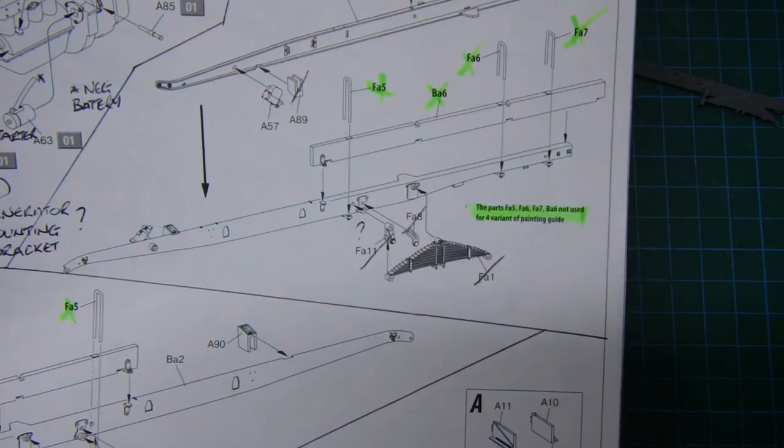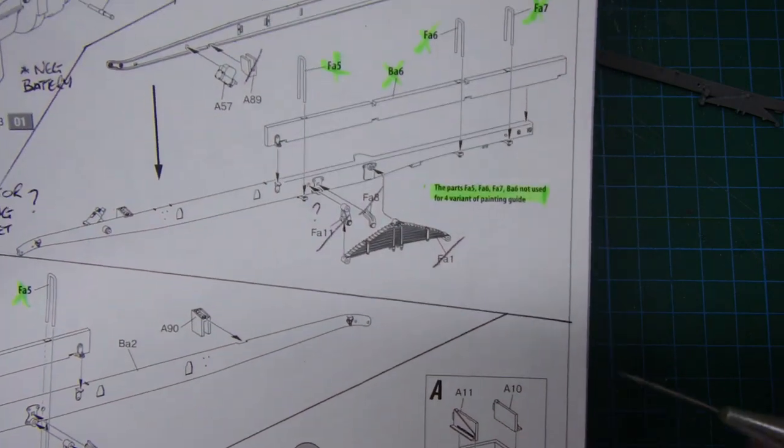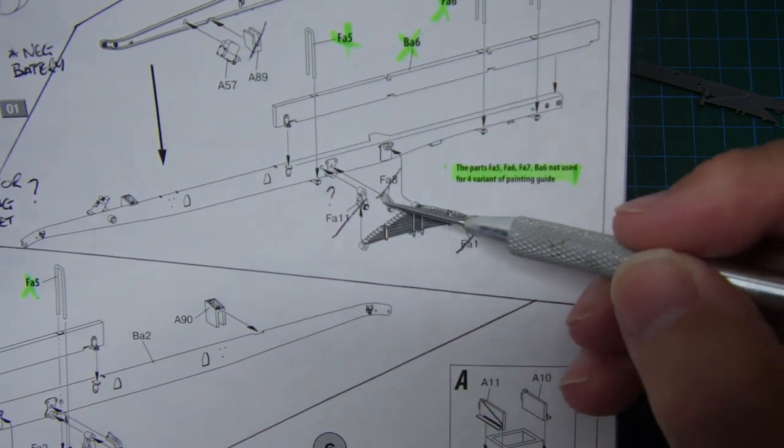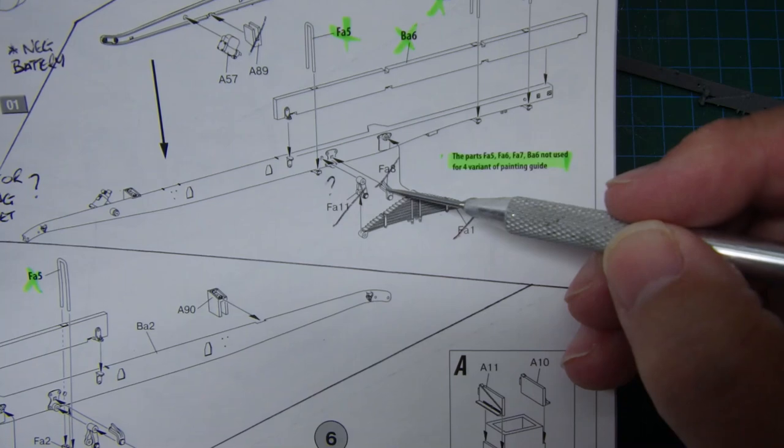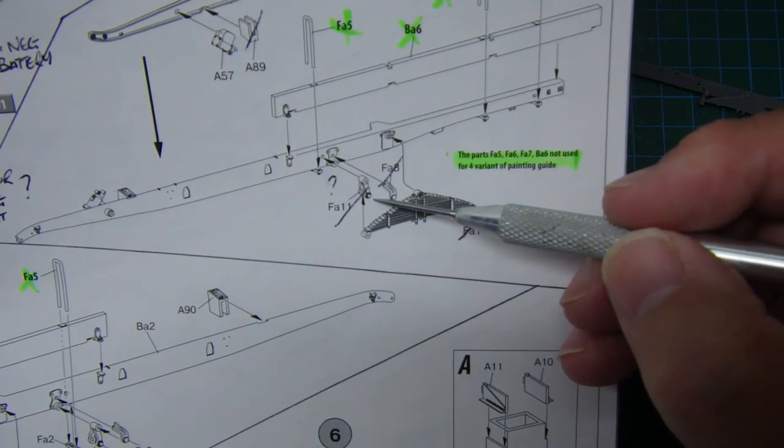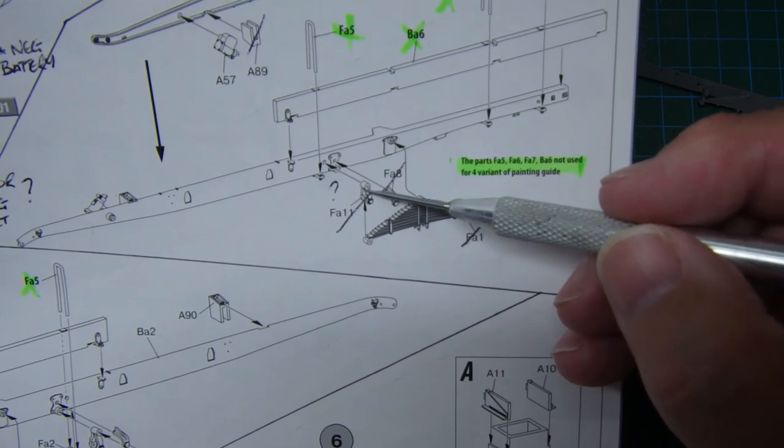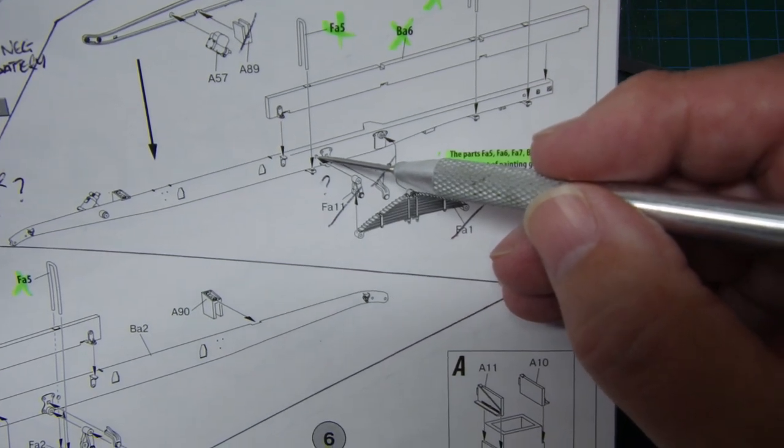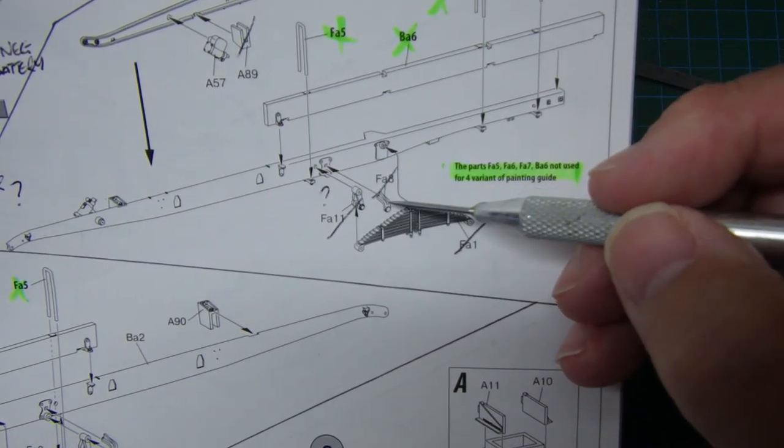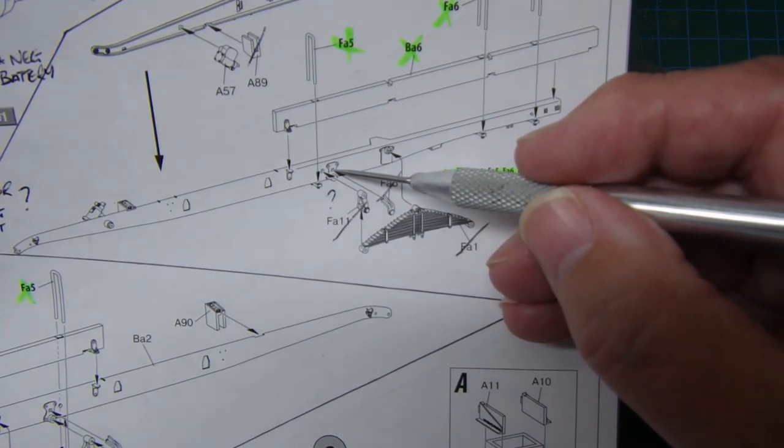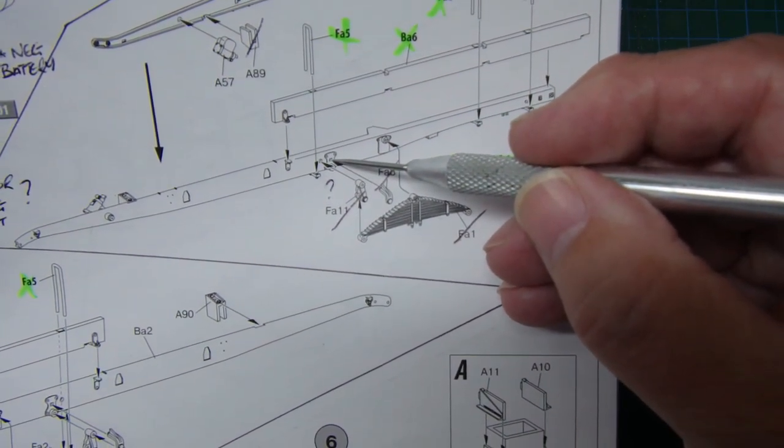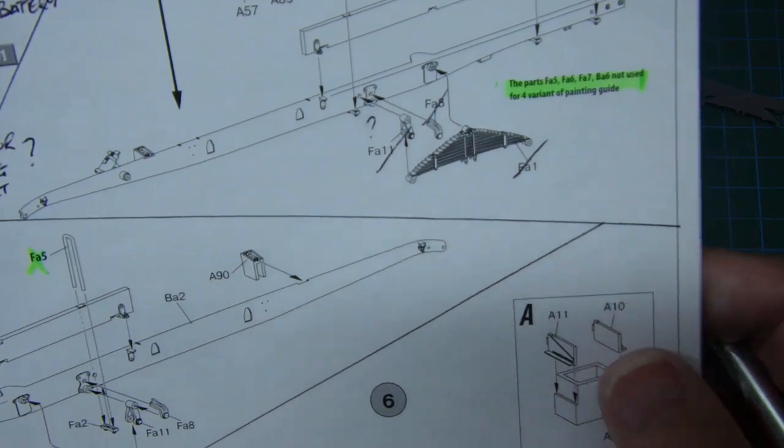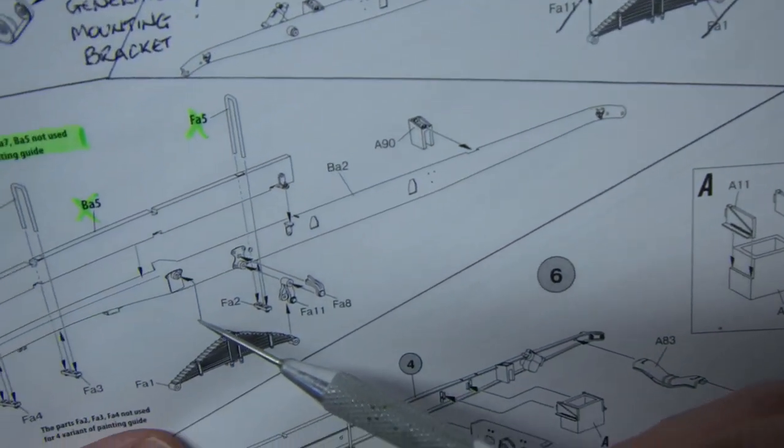But I've noticed it here on this one. In section 4, these two parts here: FA8 and FA11. According to the diagram, FA11 goes into that hole there and FA8 goes into that hole there. And that's an error.